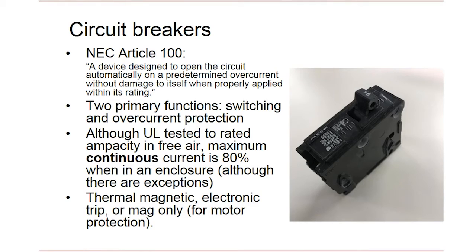Now let's talk about circuit breakers. The NEC definition is: a device designed to open the circuit automatically on a predetermined overcurrent without damage to itself when properly applied within its rating. Basically, a circuit breaker can be opened and closed against all magnitudes of current up to its short circuit current rating. The UL standard that normally applies to most circuit breakers is UL 489. These breakers use either a thermomagnetic trip element or a solid-state electronic trip element.